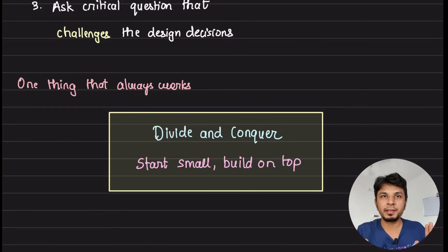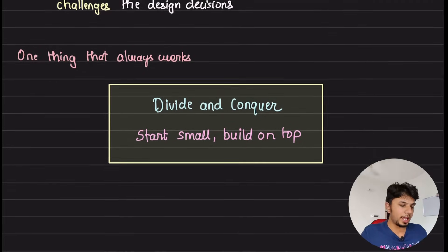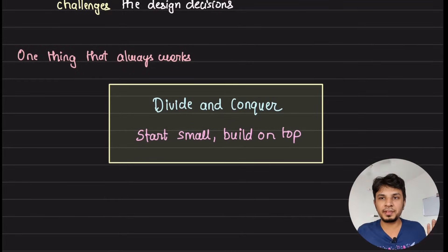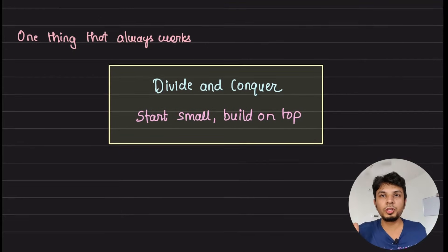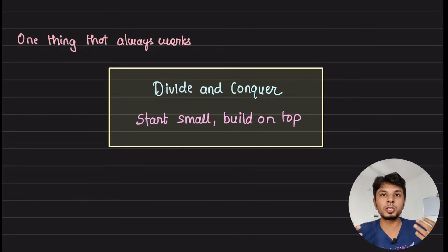And once you do that, when all of those sub-problems come together, or rather when all of your subsystems come together, this solves the entire problem optimally. So divide and conquer is a strategy that works amazingly well in system design and I would highly encourage you to look for it.